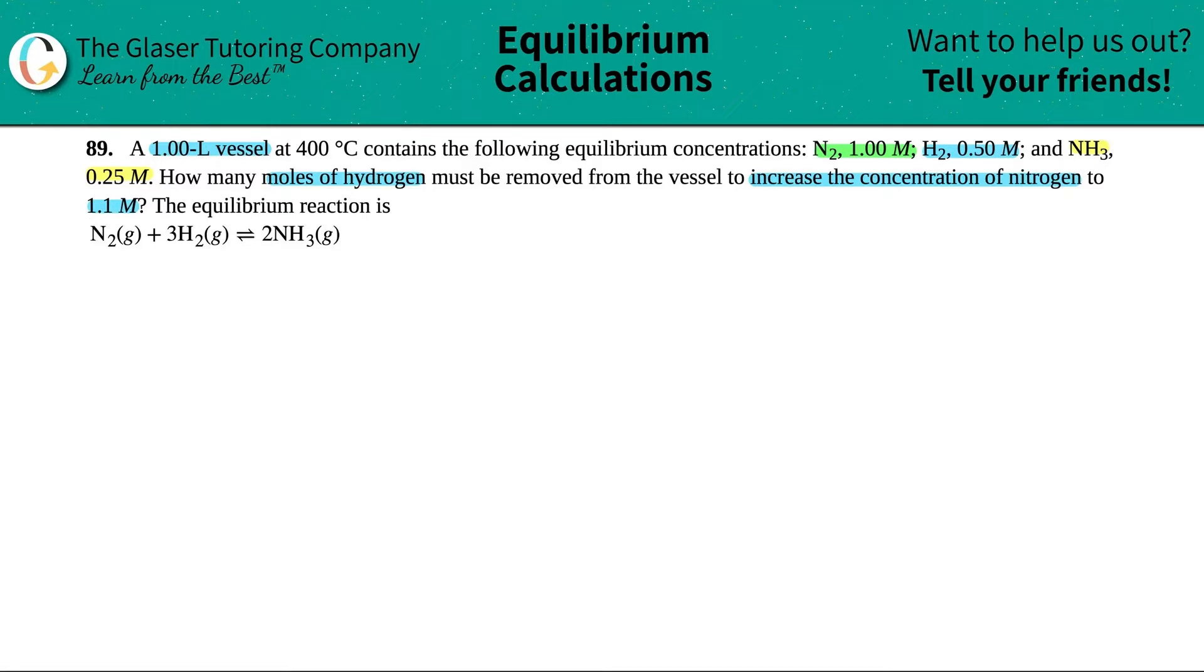So let's just write that out a little bit bigger. We have N2 gas plus 3H2 gas, and this is coming to equilibrium with 2NH3 gas.